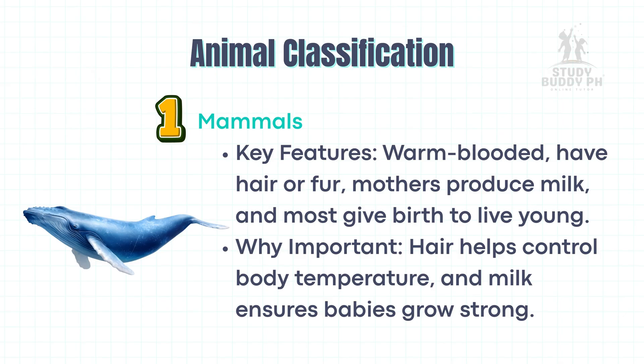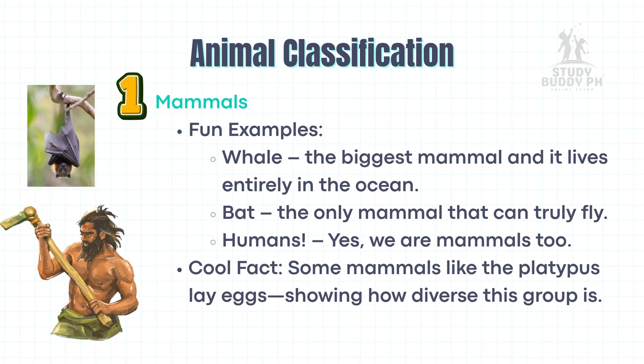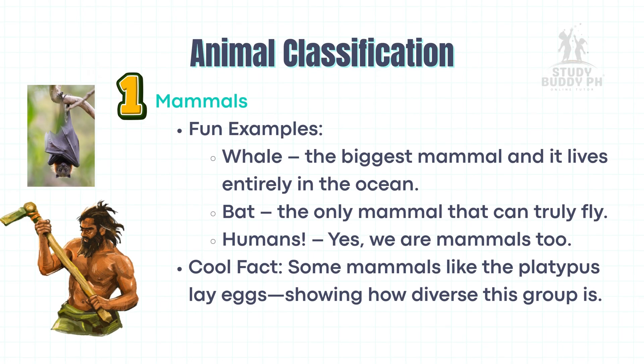Mammals: Key features — warm-blooded, have hair or fur, mothers produce milk, and most give birth to live young. Hair helps control body temperature and milk ensures babies grow strong. Examples: whale — the biggest mammal and it lives entirely in the ocean; bat — the only mammal that can truly fly; and humans — yes, we are mammals too. Cool fact: some mammals like the platypus lay eggs, showing how diverse this group is.